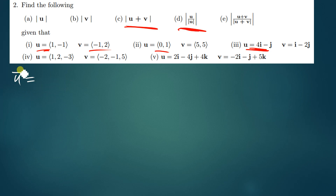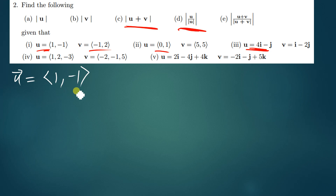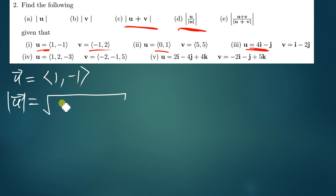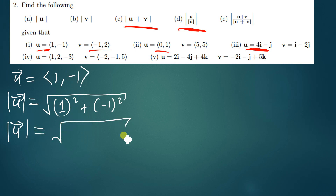Vector U has been given. Remember that when you have these kinds of brackets it represents a vector, but if you are using parentheses it represents a point. So we have U = [1, −1]. The magnitude of vector U is therefore equal to the square root of 1 squared plus negative 1 squared. 1 squared is 1, negative 1 squared gives us 1, so the magnitude of U gives us the square root of 2.